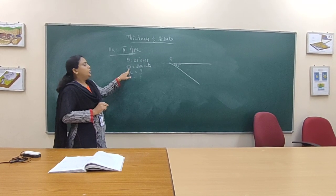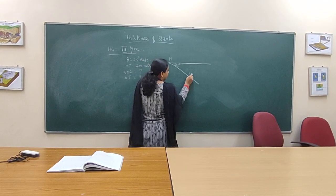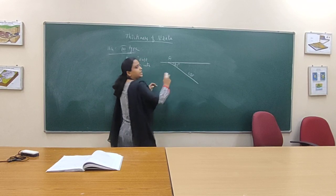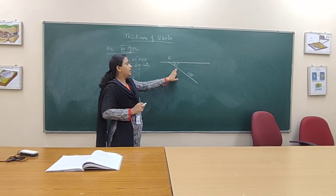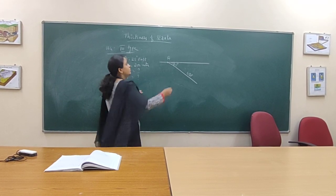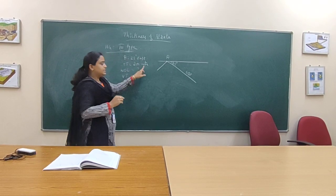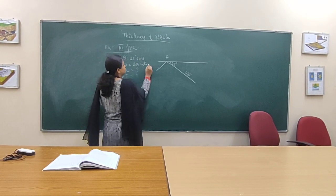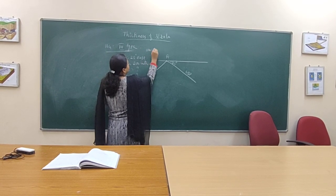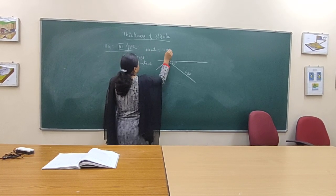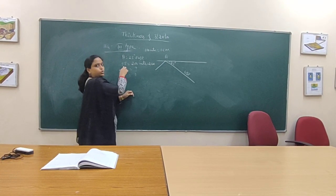Next, you will consider the true thickness. True thickness means if you consider this line, it will be an upper bedding line. For this upper bedding line, you have to put one perpendicular line representing the true thickness. Using the scale, 100 meters equals 1 centimeter, so 200 meters equals 2 centimeters.